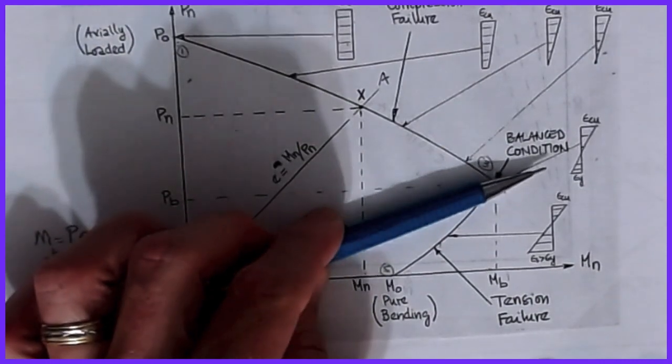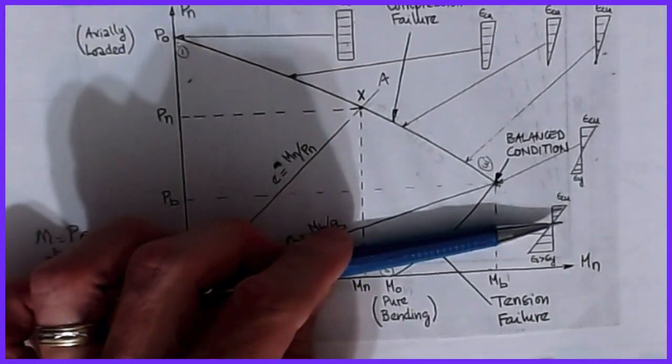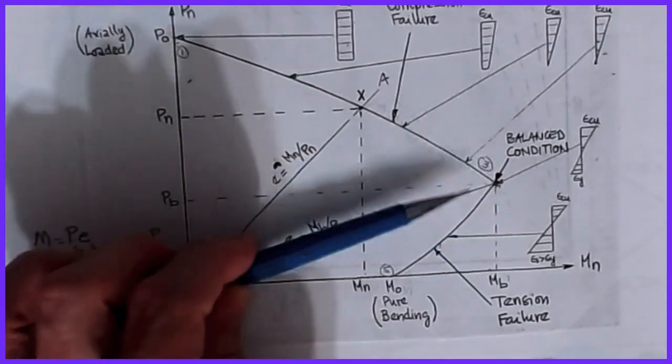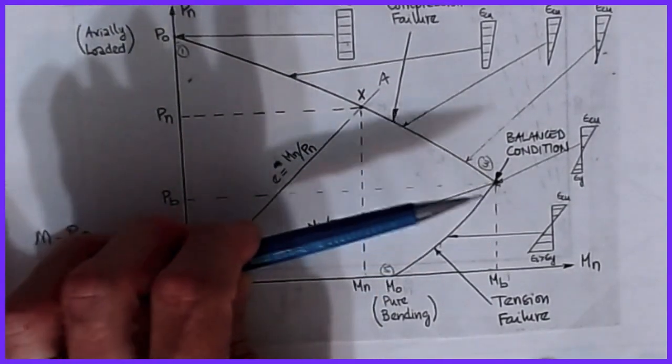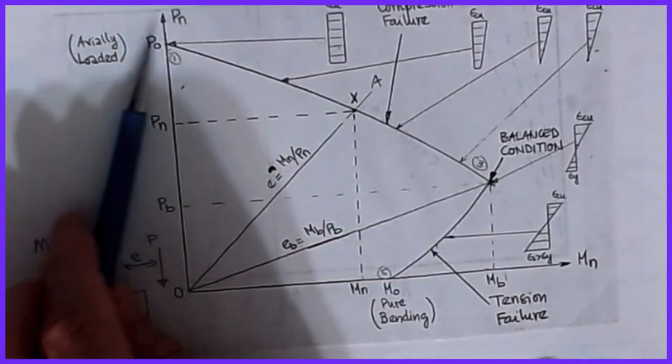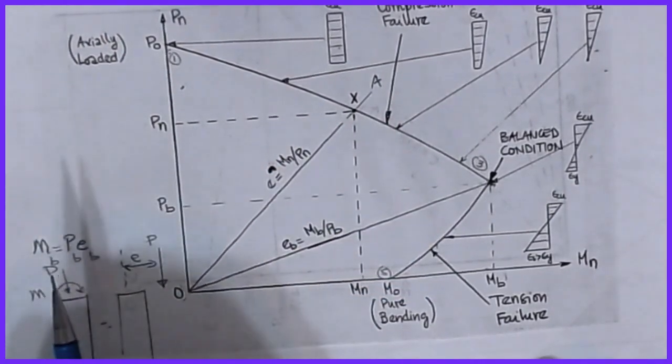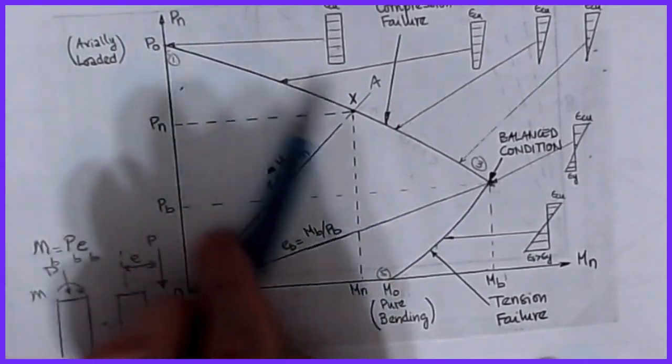Likewise, if we go beyond that and say e is 100 or something, that puts us down here somewhere. Now I'm into a tensile failure state and it's acting more like a beam than it is a column. But there's this play that exists for an axial load and a moment that is defined by the shape of this curve.